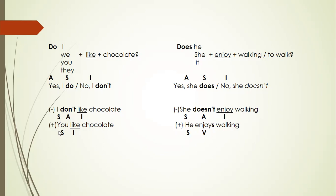Y para la oración afirmativa, en oraciones afirmativas nunca usamos auxiliar. Pero en la oración en negativo y en la pregunta, siempre vamos a usar una auxiliar. Vamos a ver en oración afirmativa: You like chocolate. He enjoys walking.